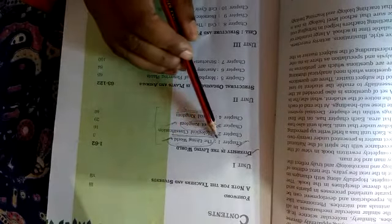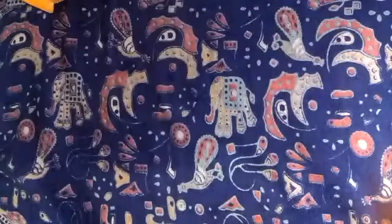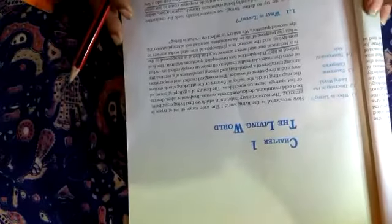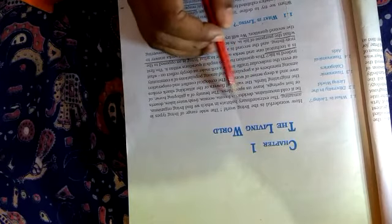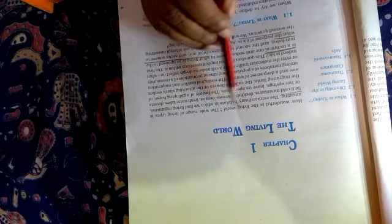In this class we will start Chapter 1, that is The Living World. In the first paragraph it gives the general idea of the living world. The chapter starts with the line 'how wonderful is the living world.' It makes you think how wonderful, how amazing, how fascinating this living world is which has a wide range of varieties.